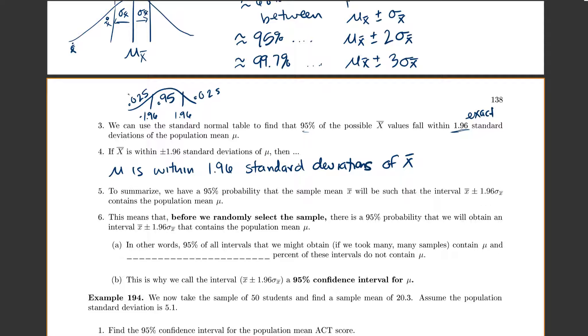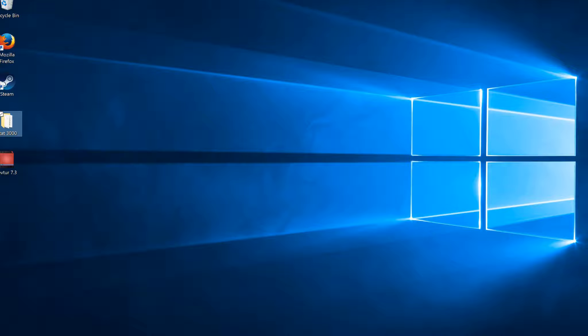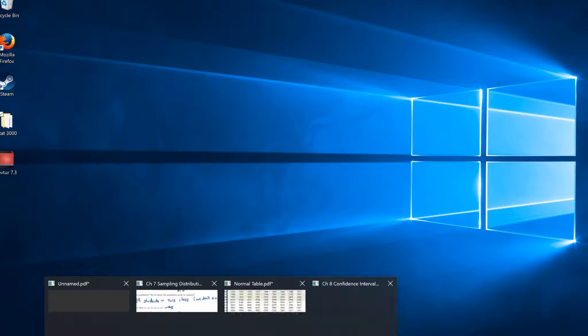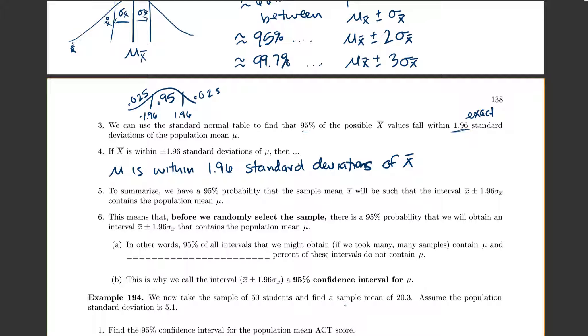But 95% of the x-bar values will be within about 2 standard deviations. So this means that before we actually select our sample, there's a 95% probability that we will obtain an interval, x-bar plus or minus 1.96 standard deviation of x-bar, that contains the population mean mu. Or in other words, 95% of all the intervals we might obtain if we took many, many samples will contain mu. And if 95% contain it, then that does mean, unfortunately, that 5% of these intervals do not contain mu.